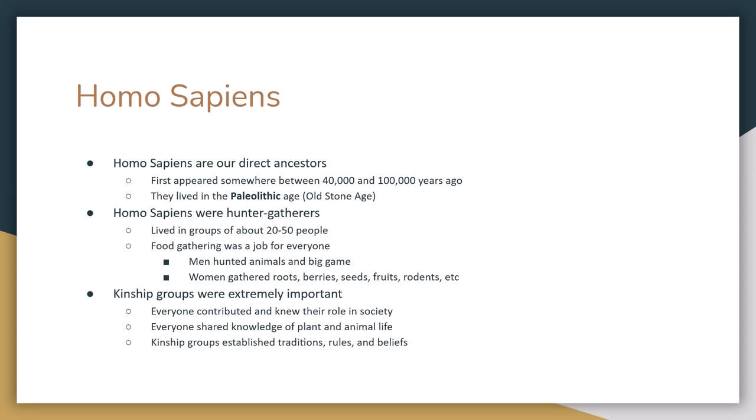Food gathering is a job for everybody. The men hunt big game, while the women hunt smaller animals and gather roots, berries, and fruits. The idea of kinship groups is also really important. Kinship groups start out as family groups where everybody knows how to contribute and knows their role. They teach each other their role in society, day-to-day life, what to eat, what not to eat, what plants to use, what plants not to use, and their basic belief system.